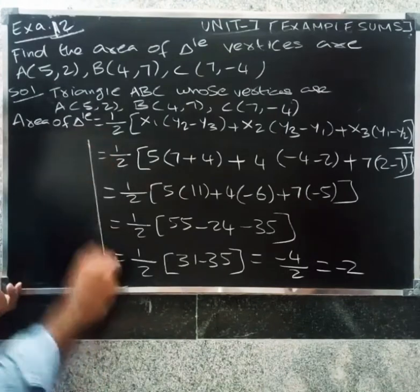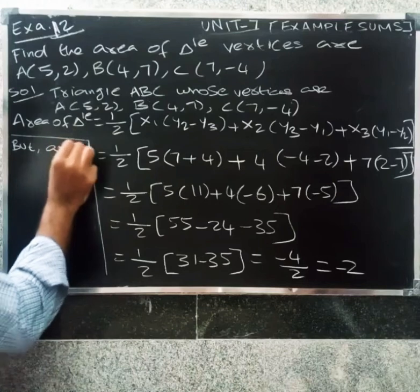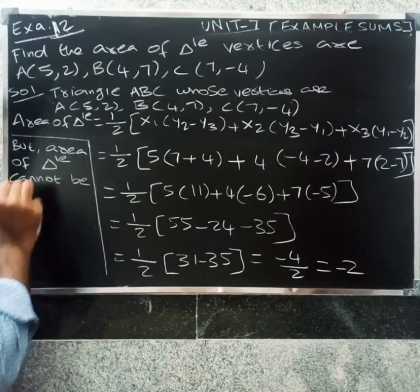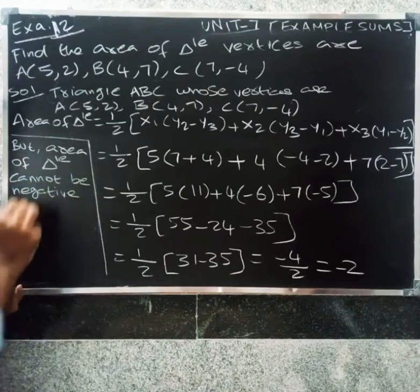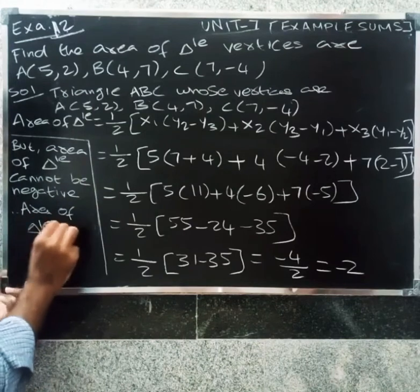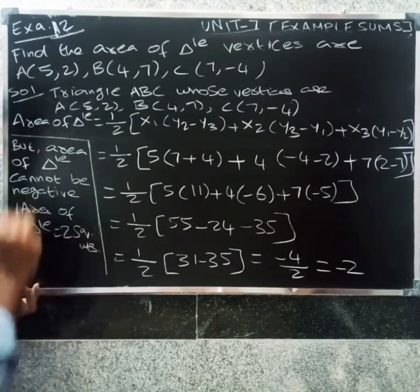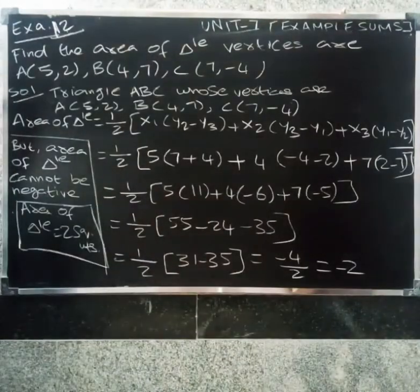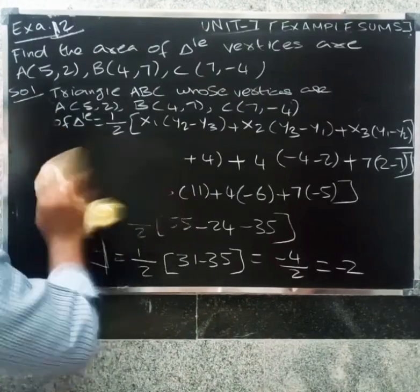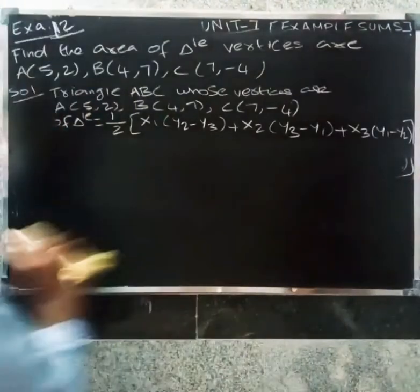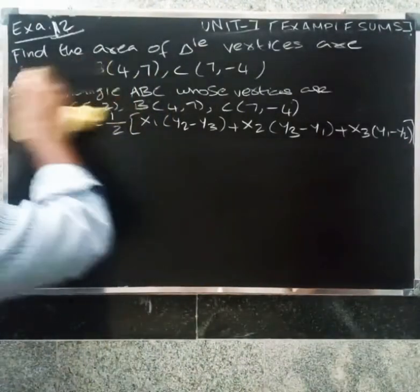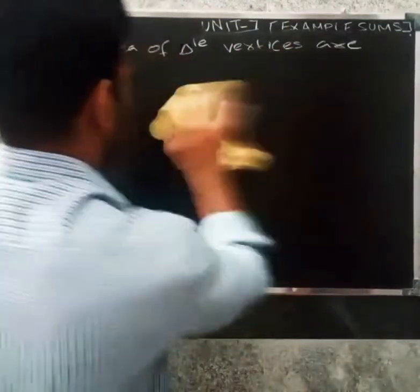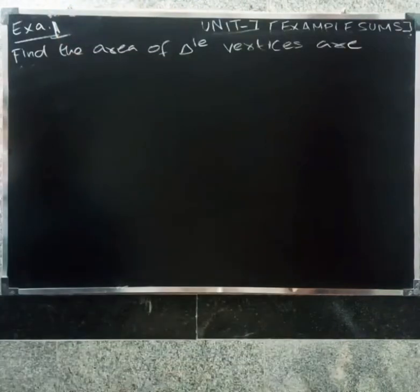Area of triangle cannot be negative, therefore area of triangle equals 2 square units.